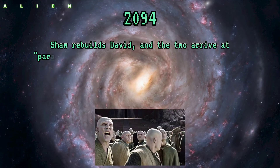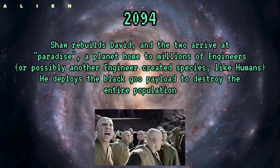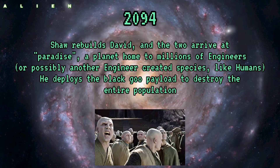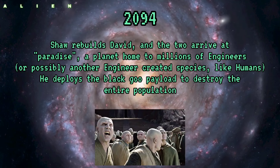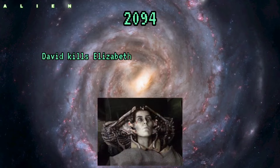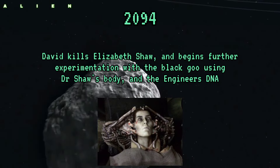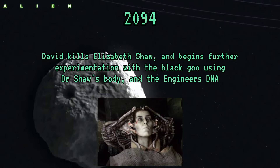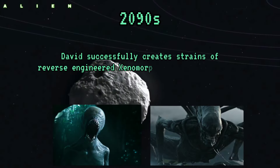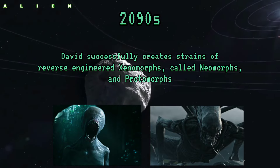2094: Shaw rebuilds David and the two arrive at Paradise, a planet home to millions of Engineers — or possibly another Engineer-created species like humans. David deploys the black goo payload to destroy the entire population, then kills Elizabeth Shaw and begins further experimentation with the black goo using her body and the Engineers' DNA. By the 2090s, David successfully creates strains of reverse-engineered xenomorphs called neomorphs and protomorphs.